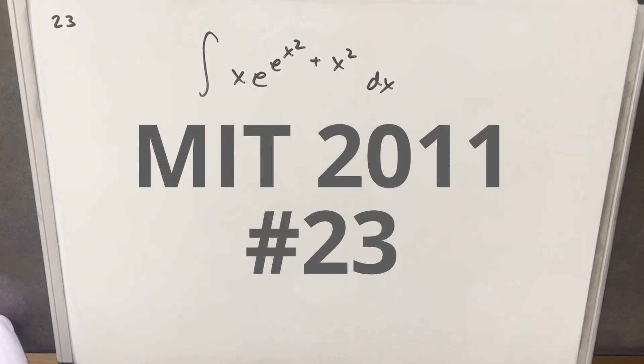Hey, we've got here another integral today. This one's from MIT, integration B2011, problem 23. We have the integral of x e to the e to the x squared plus x squared. So all of this here is all our exponent dx.